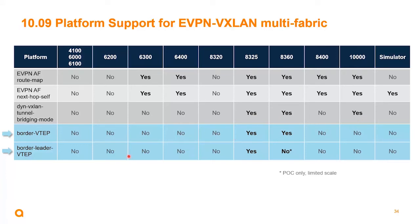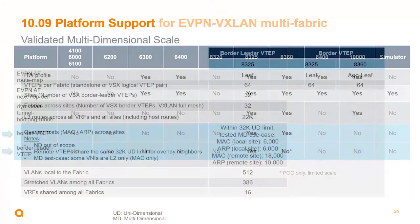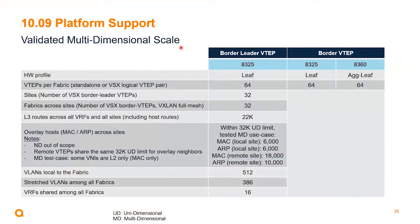For solution testing, the focus is on validated multidimensional scale. For the border VTEP, the 8325 and 8360 are fully qualified. For the border leader — the switch making all the BGP sessions with other sites — only the 8325 is qualified. The 8360 is for proof of concept with very limited scale only, not for production. The border VTEP is validated with up to 64 standalone or logical VSX VTEP pairs in the fabric.